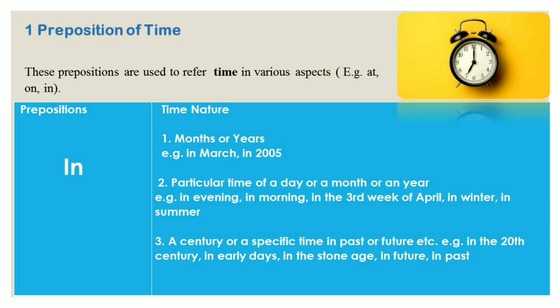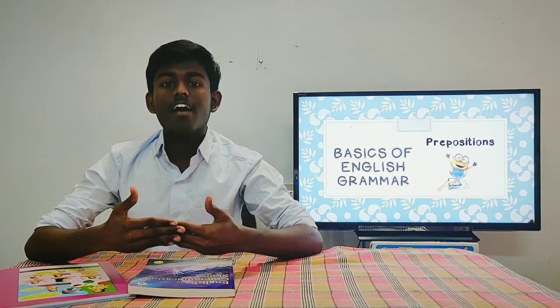Prepositions of time are used to refer to time in various aspects. The three prepositions often used are 'at,' 'on,' and 'in.' Look at the table: the preposition 'in' is used with months and years — for example, 'in March,' 'in 2005.' In the month of December, we have our annual day. In March, we have our annual exams. In 2005, I was studying in eighth standard.